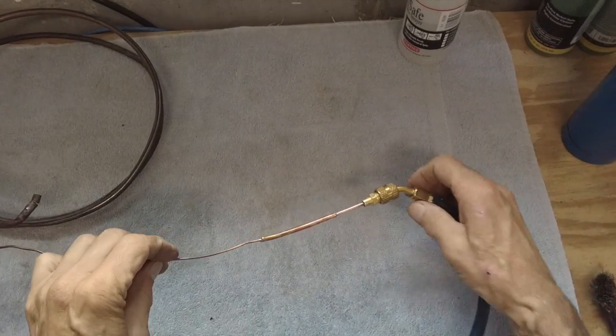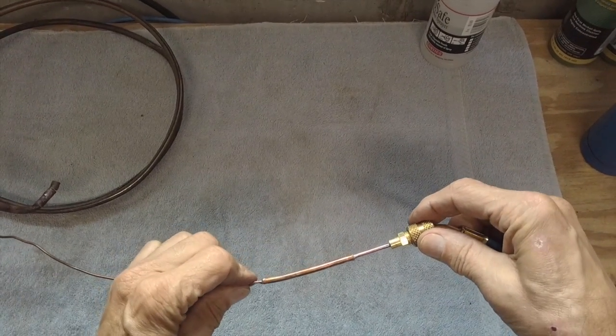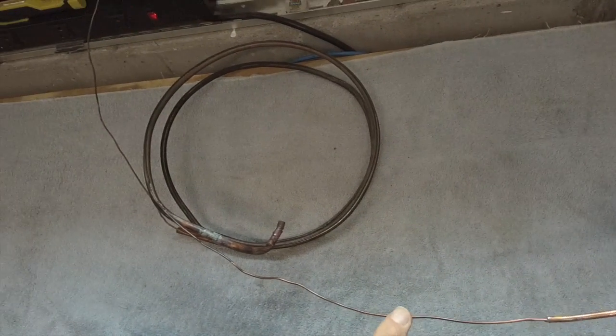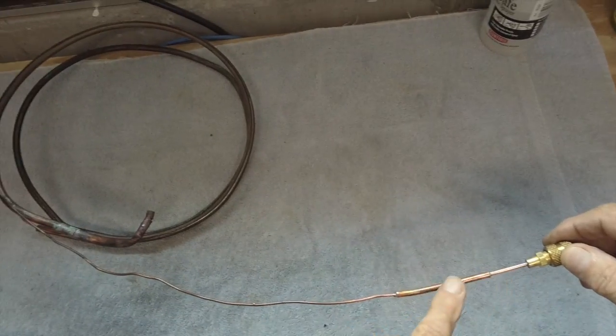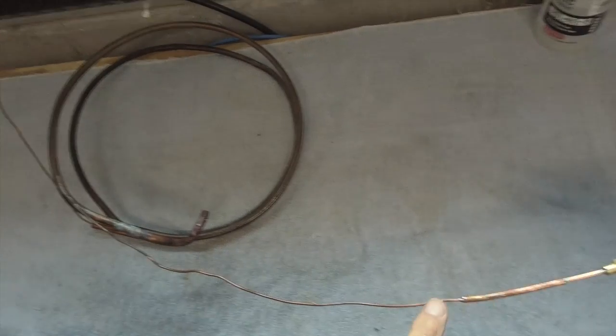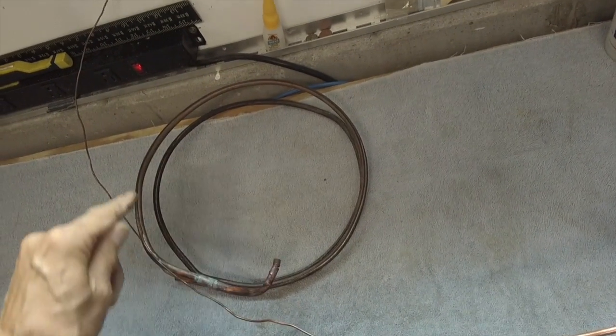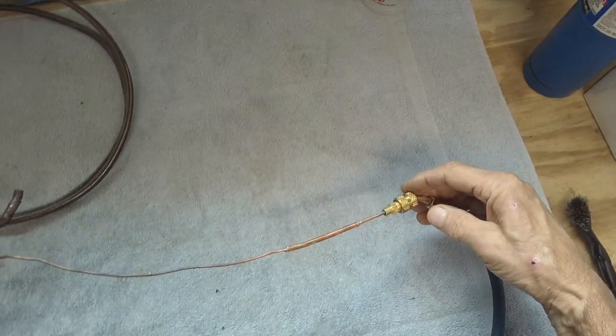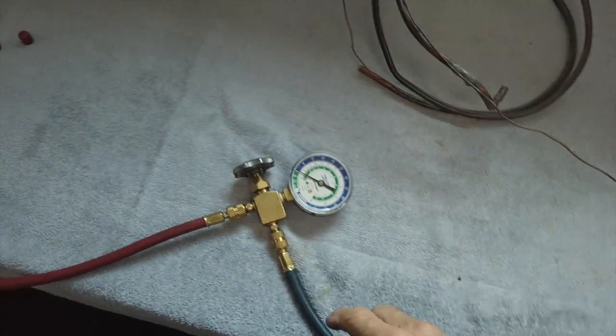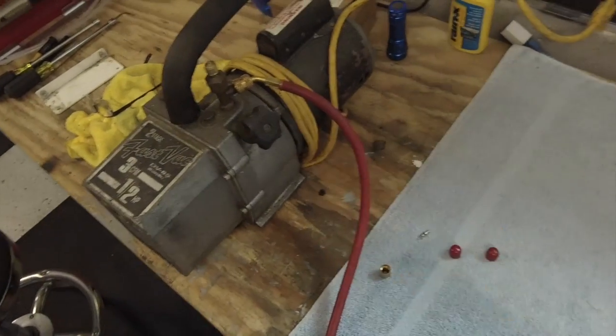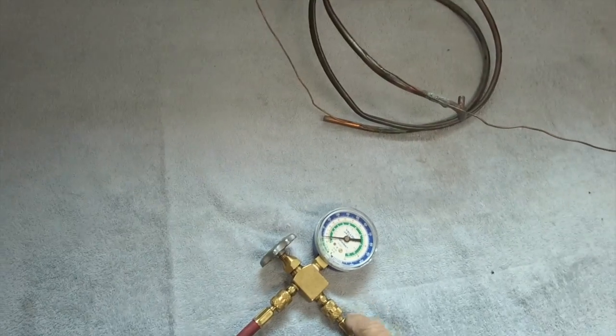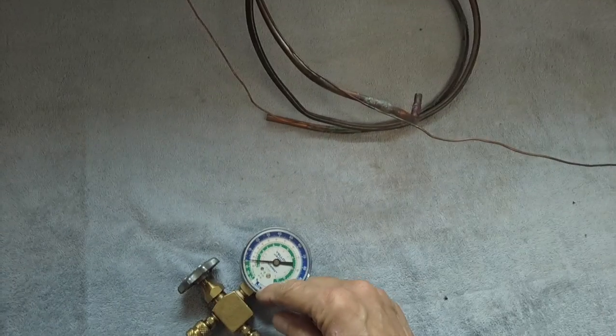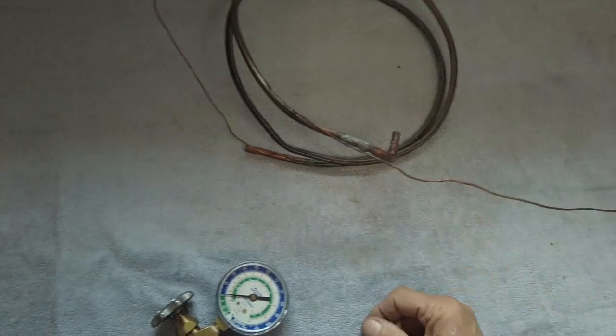So here we soldered our little tool onto the capillary tube, and the flow is going this way from the filter dryer through the heat exchanger, and then out into the evaporator coil. So we've hooked up a vacuum pump, a two-stage vacuum pump. We will pull a vacuum, and we'll be able to see if the vacuum breaks. That means we've cleared this restriction.